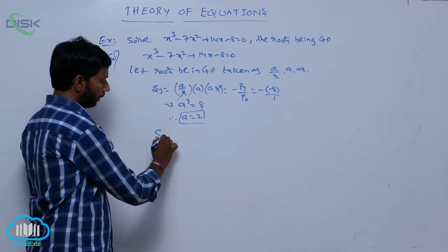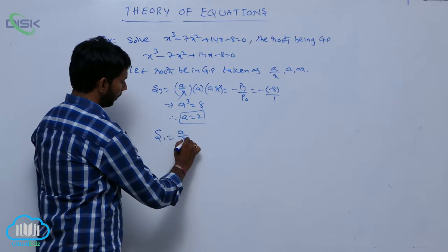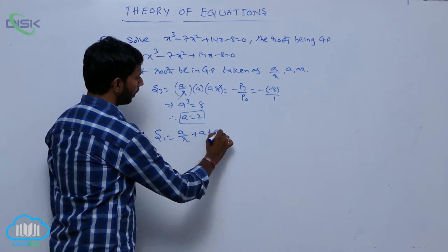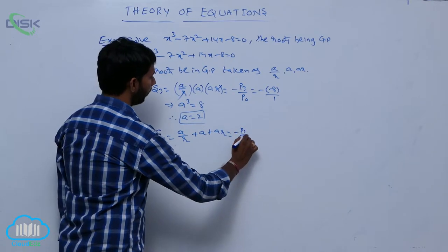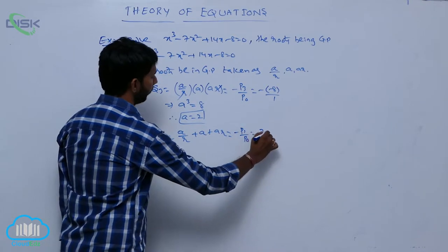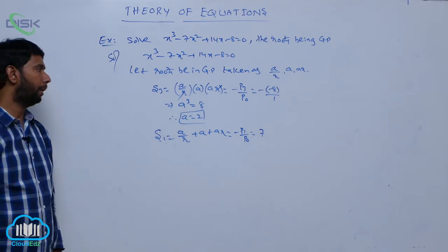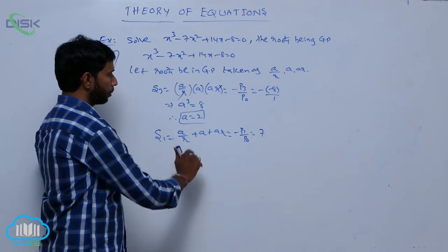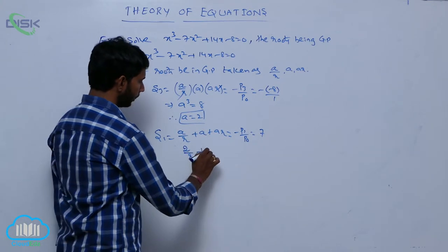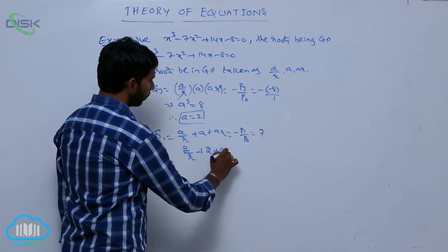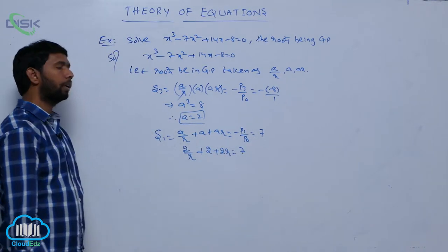Next, find the sum of roots S1. S1 = a/r + a + ar = -p1/p0 = 7. Substituting a = 2: 2/r + 2 + 2r = 7.